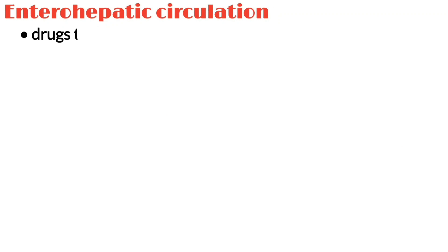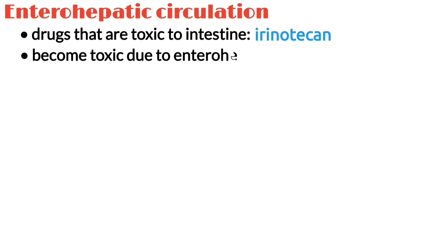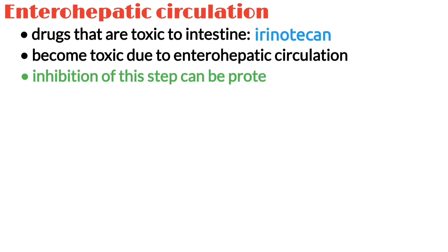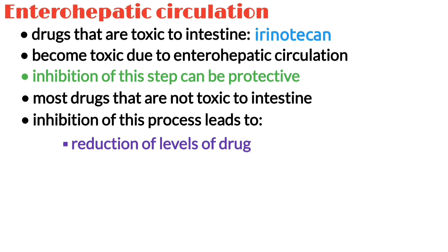For a small number of drugs that are very toxic to the intestine, such as irinotecan, these molecules which would not otherwise be very toxic can become toxic because of this process, and therefore inhibition of this step can be protective. On the other hand, for the majority of drugs which undergo enterohepatic circulation that are not toxic to the intestine, inhibition of this process leads to a reduction of drug levels and reduced therapeutic effect.